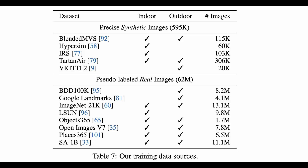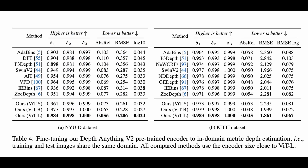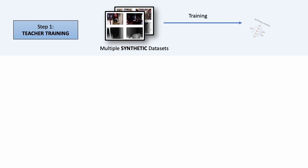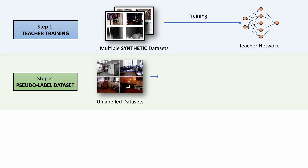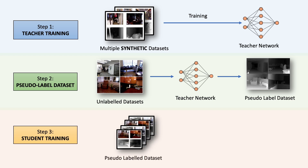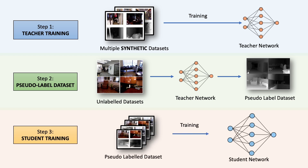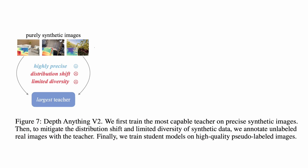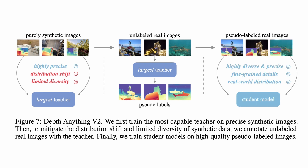Depth Anything V2 combines the power of synthetic images with millions of unlabeled images to train an MDE model that outperforms pretty much everything else. Like V1, the teacher model in V2 is first trained on labeled datasets — however, in V2 it is exclusively trained on synthetic datasets with no real-world sensor data. In step 2, the teacher model assigns pseudo-depth to all unlabeled images to create a new dataset. In step 3, the student model is trained exclusively on these pseudo-labeled images — no real labeled datasets and no synthetic datasets. The synthetic datasets are omitted during student training to avoid the distribution shift problem, so the student network only ever sees real-world images annotated by the teacher model.